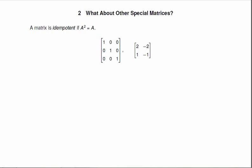Idempotent matrices are any matrix such that A squared is equal to A. So if you think about real numbers, there are two real idempotent numbers. One squared is one, and zero squared is zero. There are lots of idempotent matrices, though.